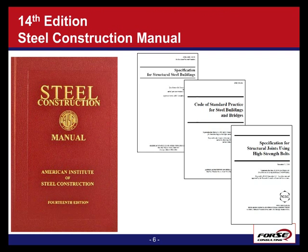There are also two other codes included in the manual. The Code of Standard Practice for Steel Buildings and Bridges covers party responsibilities for erection and construction, including documents — and we will talk about one important change to the Code of Standard Practice at the end of today's discussion. Thirdly, there is the Specification for Structural Joints Using High-Strength Bolts, which is published by the RCSC, the Research Council on Structural Connections, often referred to as the bolt spec.